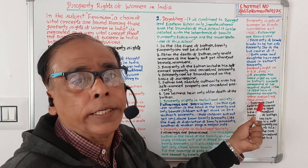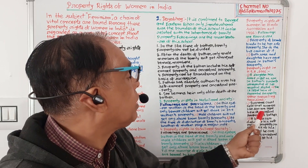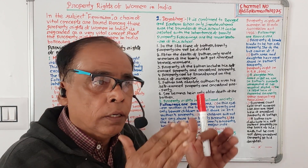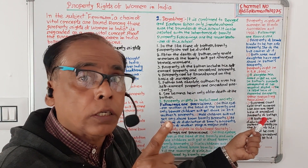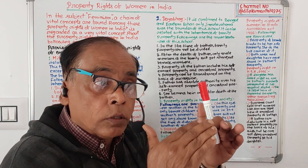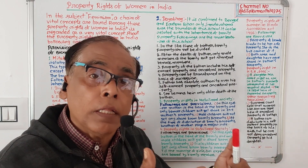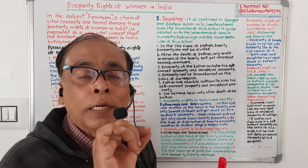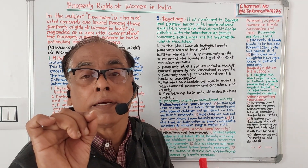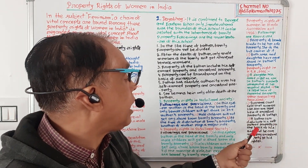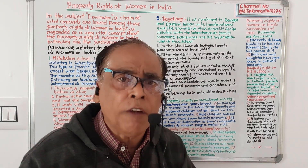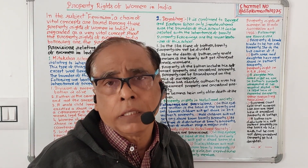Other provisions relating to inheritance of property. Number one: the Supreme Court has ruled that, like a son, a daughter is a legal heir of the ancestral property of the father — both daughter and son have equal share in the father's ancestral property. Number two: the father can distribute his self-earned property on the basis of his wish, but he cannot deny ancestral property to his daughter.